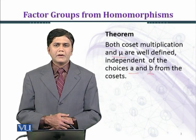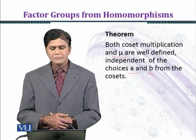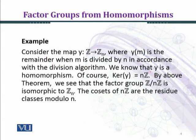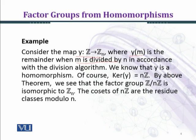Now we shall consider an example. Consider the map Y from Z to Z_N, where Z is the set of integers and Z_N is the residue classes of integers under modulo N. There will be N elements in Z_N, and Y(M) is the remainder when M is divided by N, in accordance with the Division Algorithm.